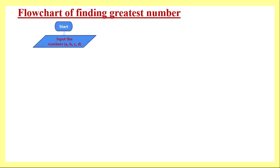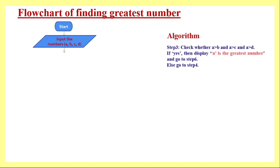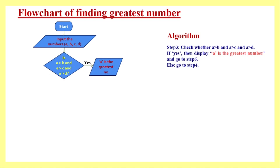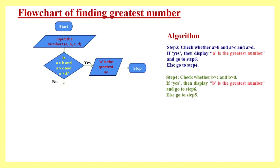Now we will see this logic through a 2D flowchart representation. The first step is Start, using the appropriate block. Then we input all numbers A, B, C, D. As per the algorithm, we check whether A is greater than B, C, and D using a decision-making block. If yes, we display that A is the greatest number and stop. If no, we check number two with respect to number three and number four.